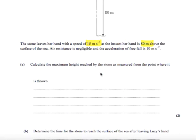Air resistance is negligible and the acceleration of free fall is 10 meters per second squared. We want to calculate the maximum height reached by the stone as measured from the point where it's thrown. So how high above her hand does the stone get?